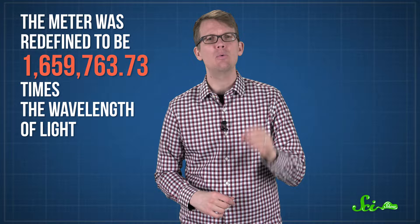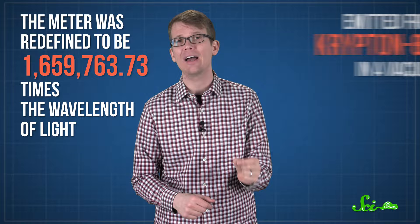They ended up picking the sharp, orangey light produced by a form of Krypton called Krypton 86 during one particular energy transition. And in 1960, at the 11th General Conference on Weights and Measures, the meter was redefined to be 1,659,763.73 times the wavelength of light emitted from Krypton 86 in a vacuum. The actual length of the meter didn't change at all, just the definition.